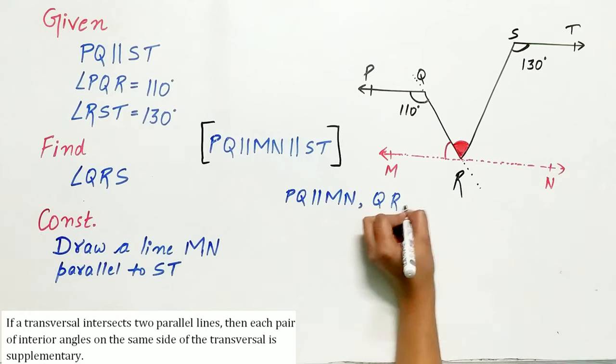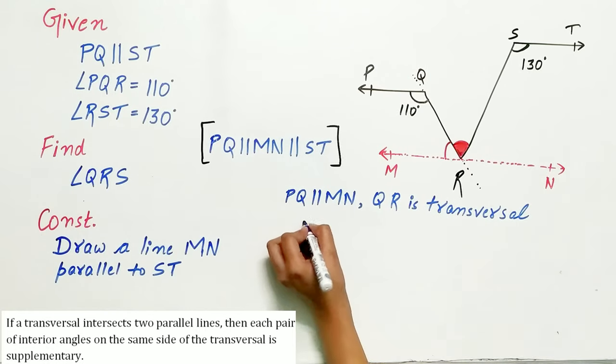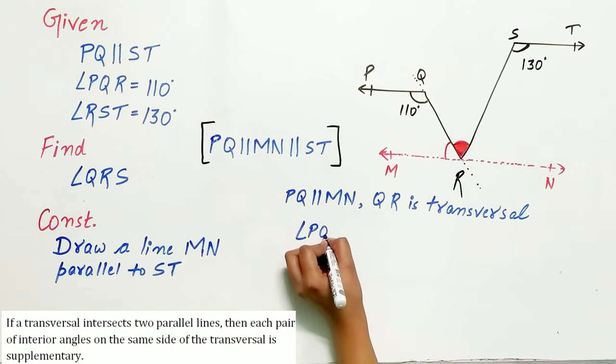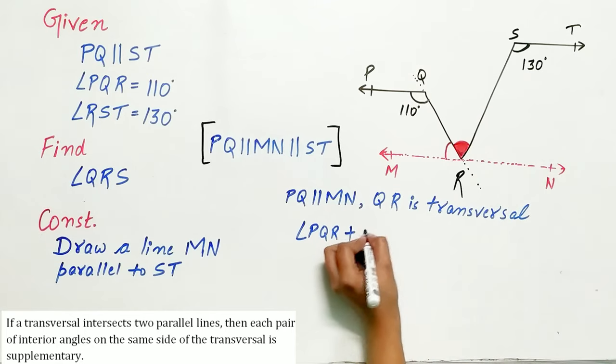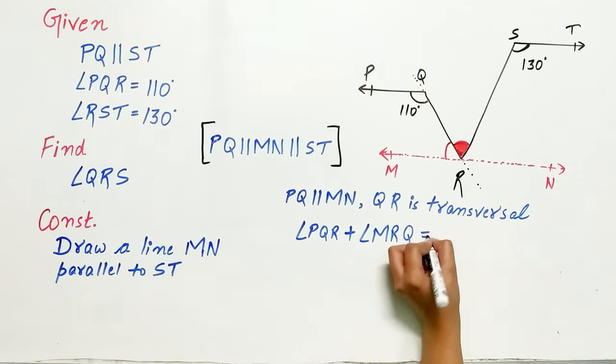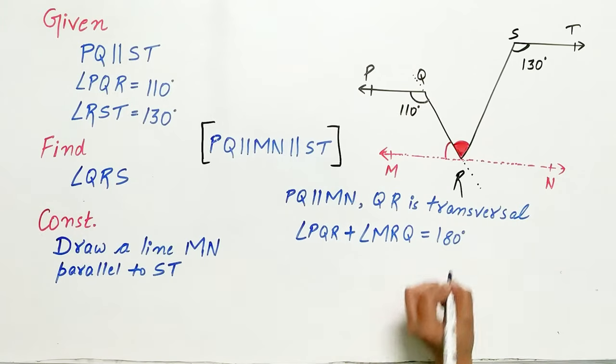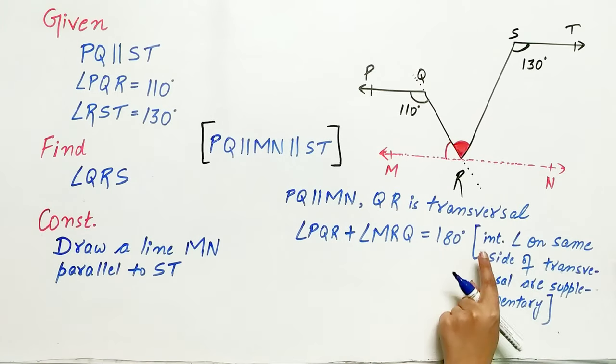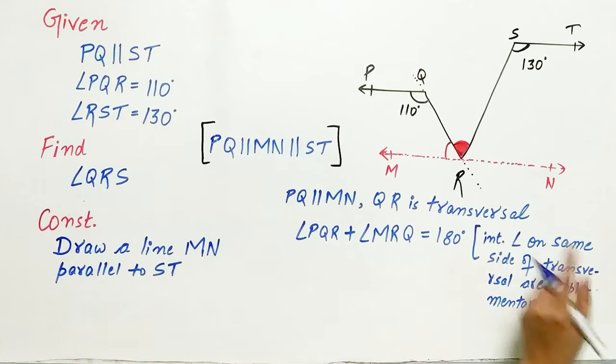That means the sum of angle PQR and angle MRQ is 180 degrees. So PQ is parallel to MN, QR is a transversal. Hence angle PQR plus angle MRQ equals 180 degrees. Why? Because interior angles on the same side of the transversal are supplementary.